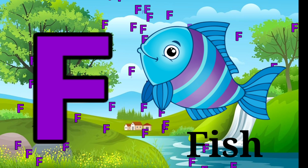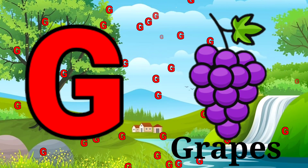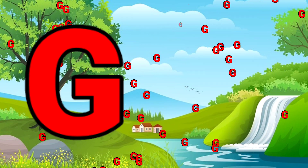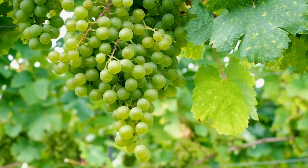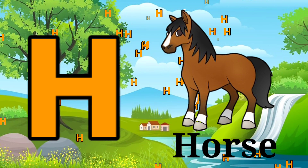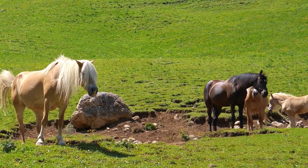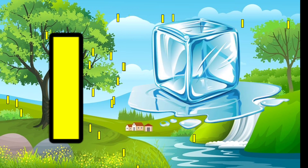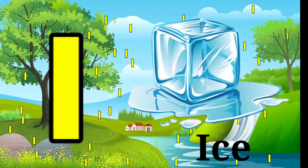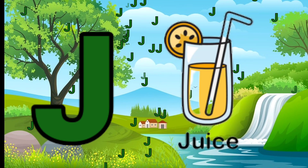F for Fish. G for Grapes. H for Horse. I for Eyes. J for Juice.